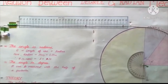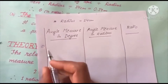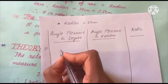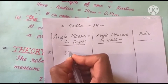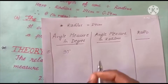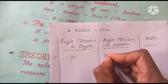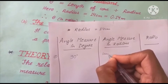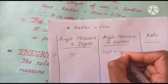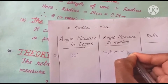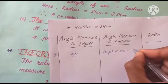Now we see that the spherical ball is at 21.9 cm. So the length of the arc is 21.9 cm. We now make some calculations. The angle measured is 90 degrees and the length of arc we have measured is 21.9 cm.